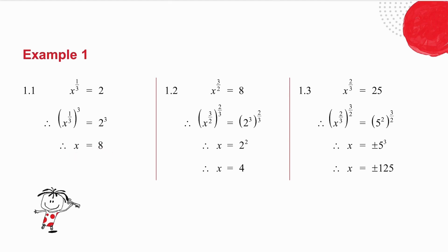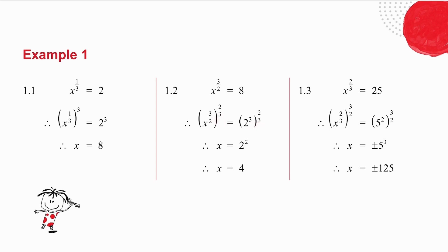In exactly the same way, in 1.2, I've got x to the power 3 over 2. To get x to the 1, I raise both sides to the power 2 thirds, because 3 over 2 times 2 over 3 is 1. I've also written 8 as 2 cubed. That gives me x to the 1. Multiply your powers together and you get 2 squared — in other words, x is equal to 4.